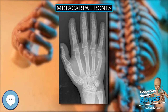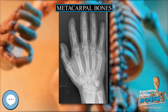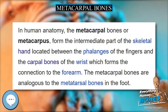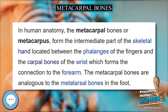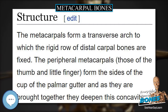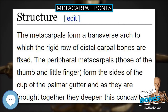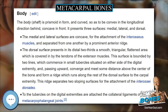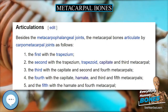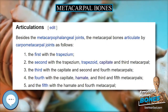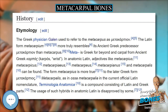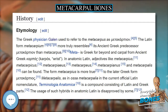Head: the head, or digital extremity, presents an oblong surface markedly convex from before backward, less so transversely, and flattened from side to side. It articulates with the proximal phalanx. It is broader and extends farther upward on the volar than on the dorsal aspect, and is longer in the anteroposterior than in the transverse diameter. On either side of the head is a tubercle for the attachment of the collateral ligament of the metacarpophalangeal joint.